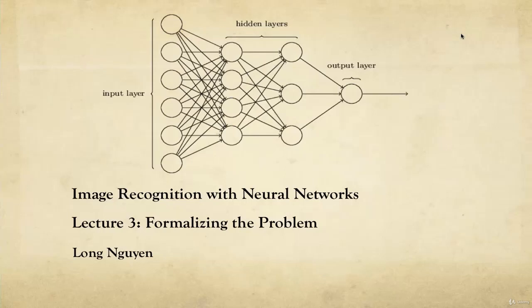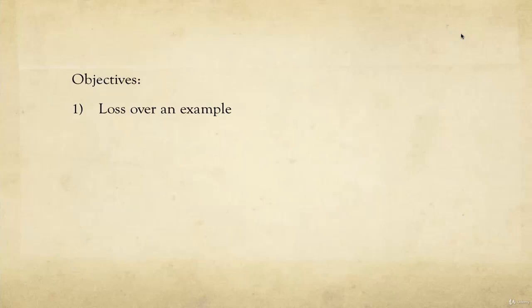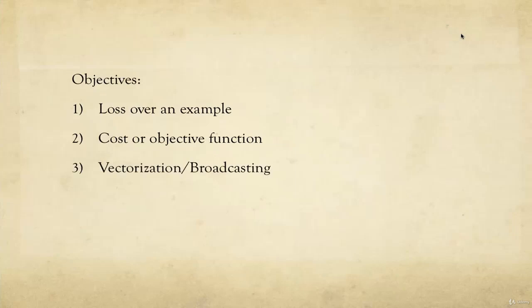Welcome back to the lecture series on Image Recognition with Neural Networks. This is lecture 3, Formalizing the Problem. Our objectives are to understand what a loss is over one training example, talk about the cost and the objective function, vectorization and broadcasting, and then talk generally about the training process.